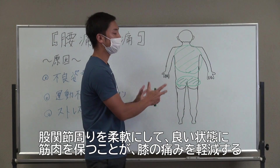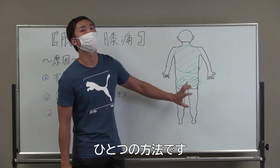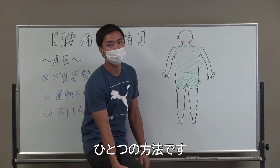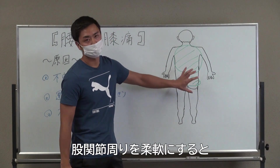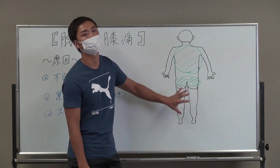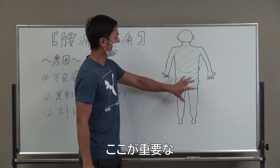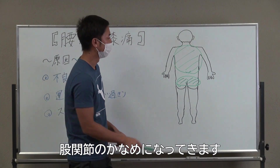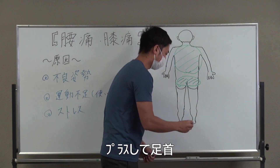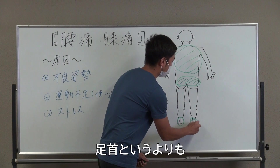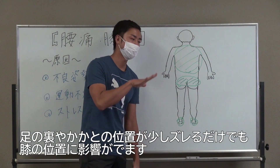背中やお尻周りの筋肉をほぐしてリセットすることがすごく大事になります。お尻周りの筋肉をほぐして骨盤の位置をリセットするだけでも結構膝の痛みが軽減する傾向が多いです。なぜかというと膝は単独で動かす関節ではなくて、股関節を動かしてその補助として動く関節でもあるので、できる限りこの股関節周りを柔軟にしていい状態に筋肉を保つことが膝の痛みを軽減する一つの方法でもあります。外傷の場合でも、股関節周りの動きをよくしてあげると膝の痛みの抜け方が早くなったりします。